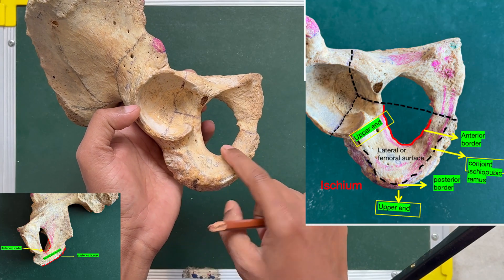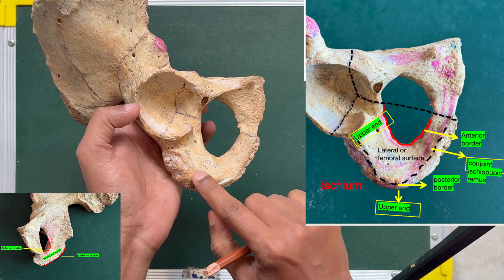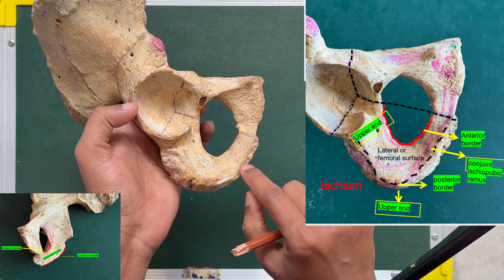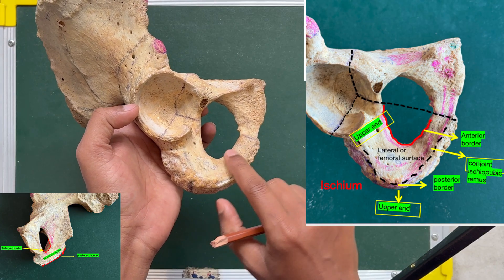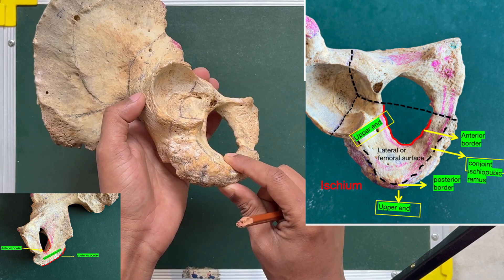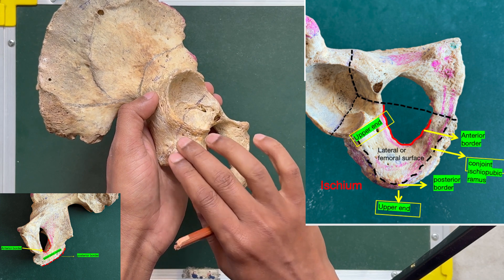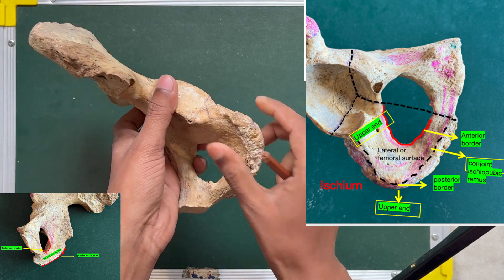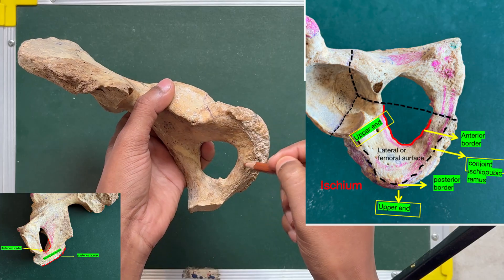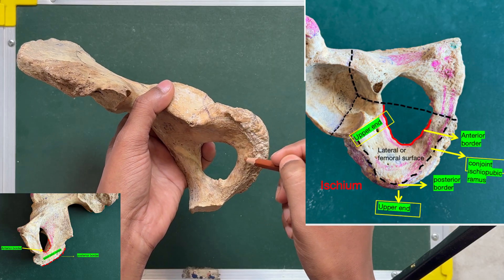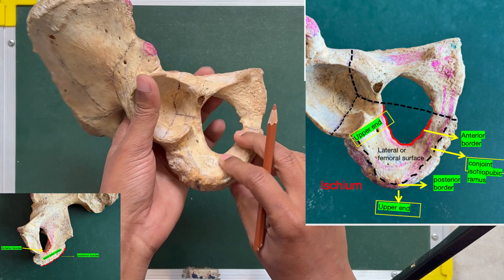The body of the ischium has three surfaces: the femoral or lateral surface between the anterior and lateral borders, the dorsal or posterior surface on the back side, and the pelvic or medial surface.